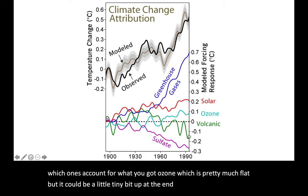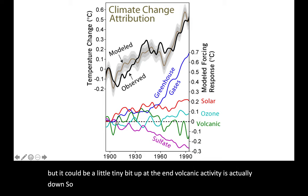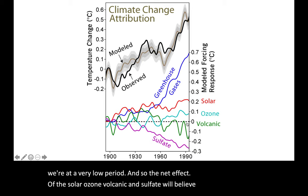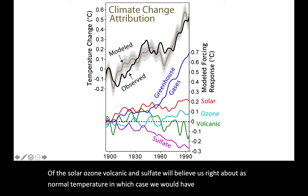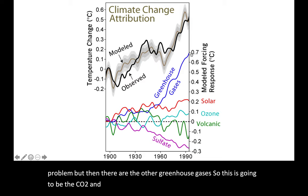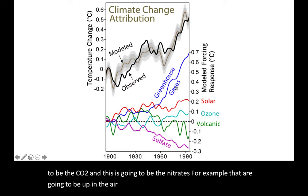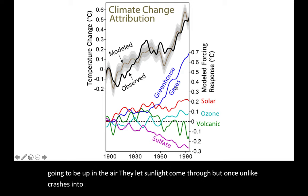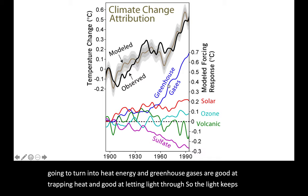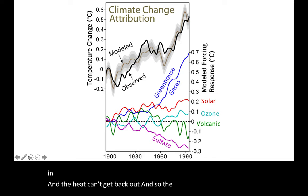Sulfate is one of these greenhouse gases. We used to pump tons of it out into the atmosphere, but we've been really reducing, and we're at a very low period. The net effect of the solar, ozone, volcanic, and sulfate will be to leave us right about at normal temperature — no rise, no problem. But then there are the other greenhouse gases: CO2 and nitrates, for example. They let sunlight come through, but once sunlight crashes into the ground, it turns into heat energy. Greenhouse gases are good at trapping heat and good at letting light through, so the light keeps coming in and the heat can't get back out, and the Earth's temperature goes up.